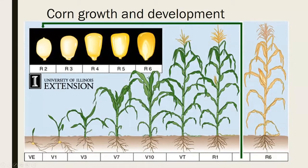V3 means there's three — one, two, three. V7 has seven, and V10 has ten. As soon as the tassel emerges, we move to VT, which stands for tassel. And then we enter the reproductive stages. R1 is when the silk first emerges. And then between R1 and R6, which is a totally dried down plant, you have all of these different stages of grain development.